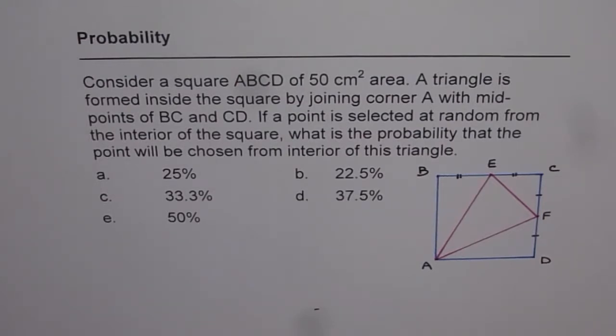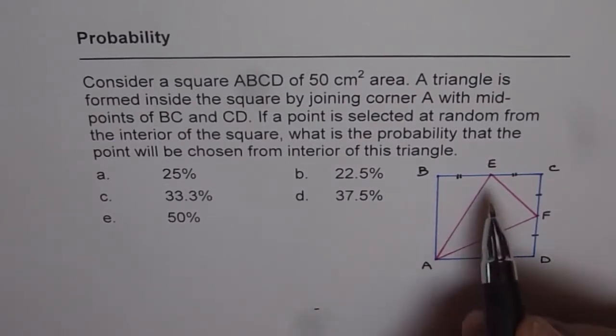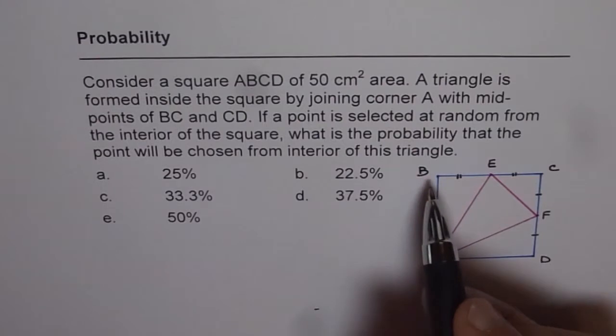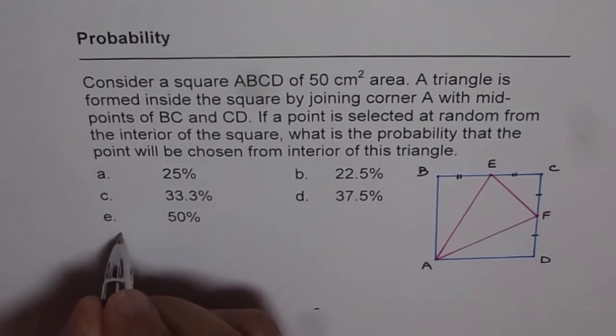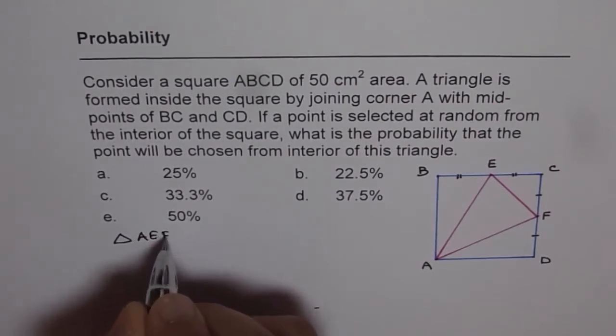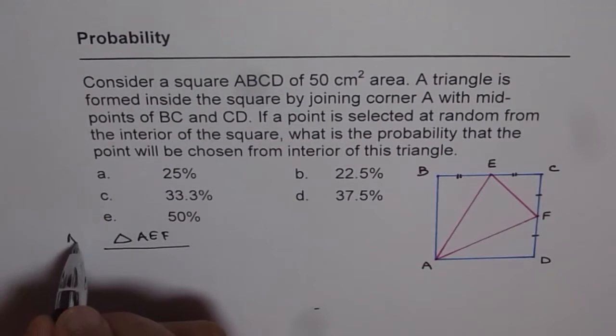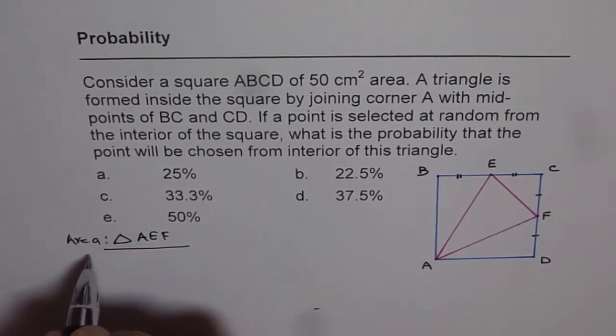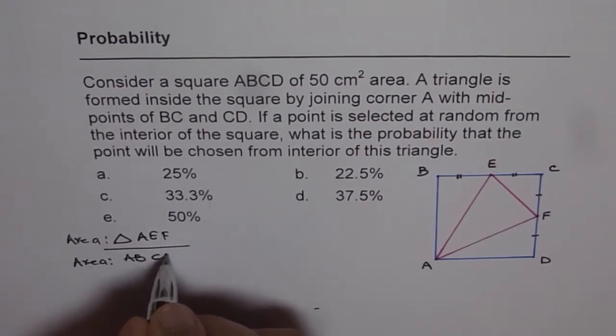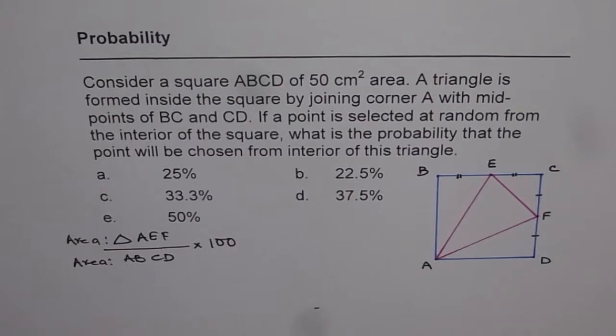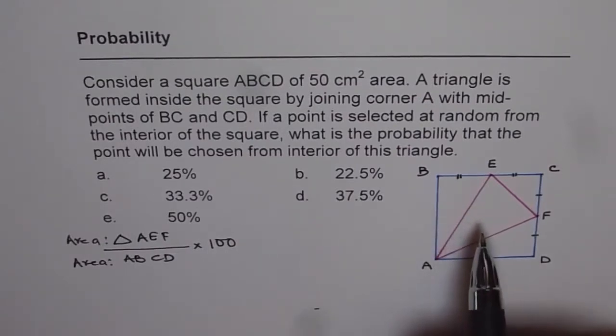Now to solve these kinds of problems, what you should understand here is that basically we need to find ratio of triangle AEF to that of the square and that gives us the probability. So the probability here is area of triangle AEF over area of the square ABCD times 100. That is what is the probability for getting this answer.